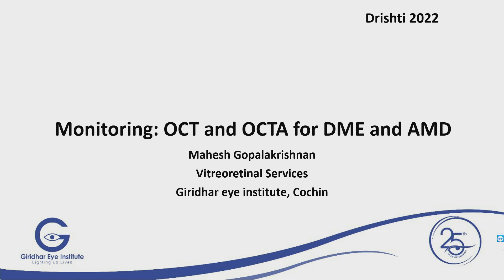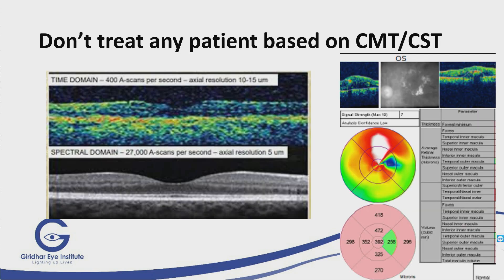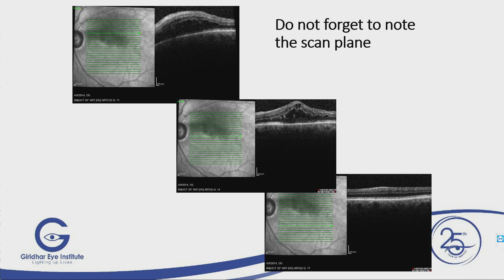My first message is: don't treat any patient based on central macula thickness or central subfoveal thickness, especially if the clarity is not good. There are many biomarkers or findings in OCT that will guide you. Like in Humphrey visual field, the glaucoma surgeons say don't look at the gray scale and treat — it's exactly the same. Don't look at that map and treat, because there could be a lot of artifacts.